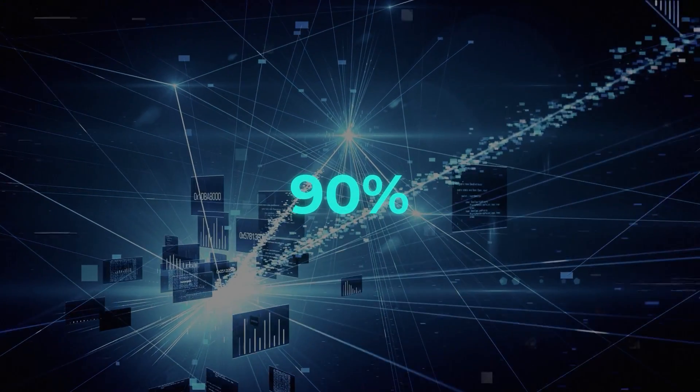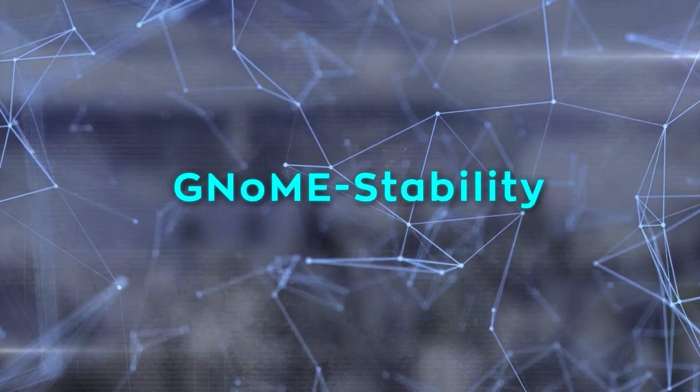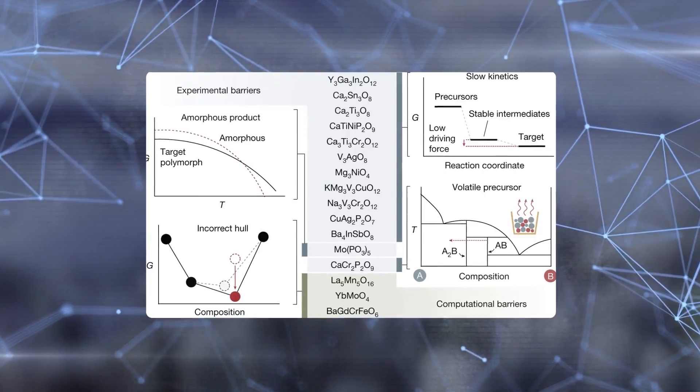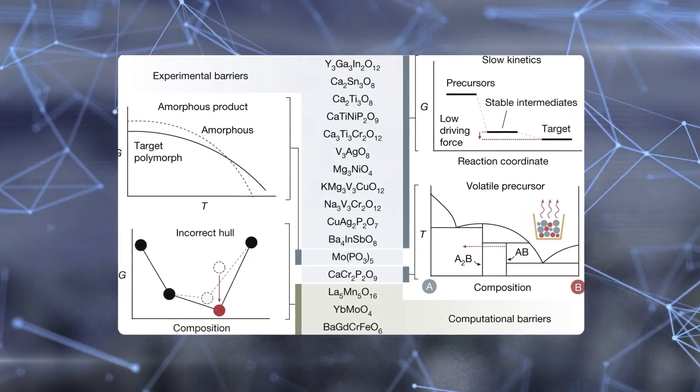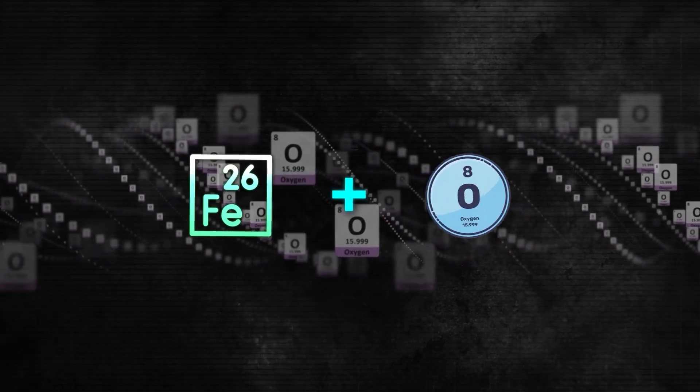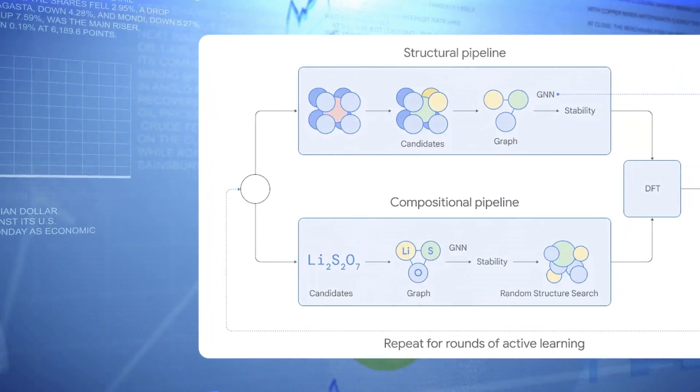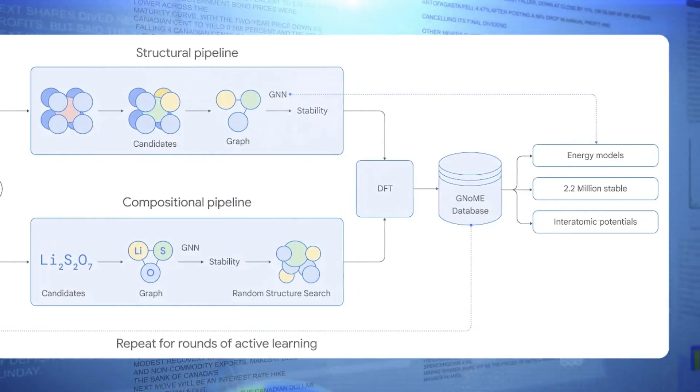GNoME works through two main models. The first one, GNoME Stability, predicts how likely a material is to be stable based on its composition. For instance, if you input iron and oxygen, it assesses if they can form a stable material. This model uses a graph neural network to process data, where it represents materials as a network of atoms (nodes) connected by bonds (edges).